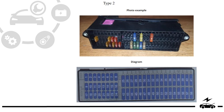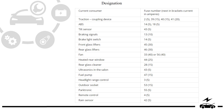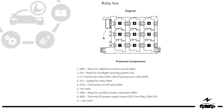Type 2: photo, diagram, designation. Relay box: diagram, protected components.